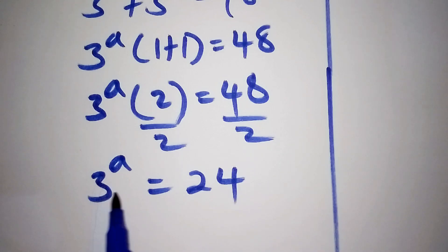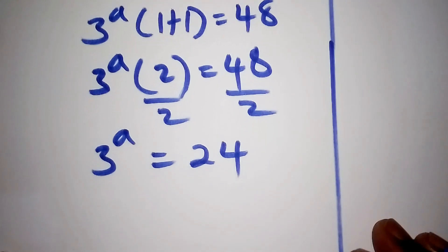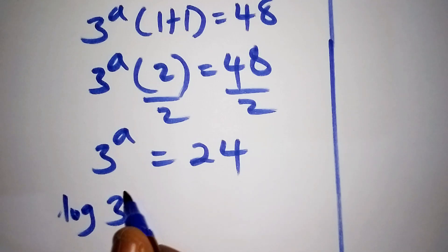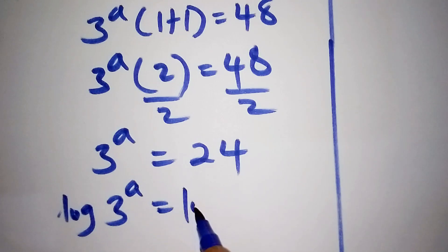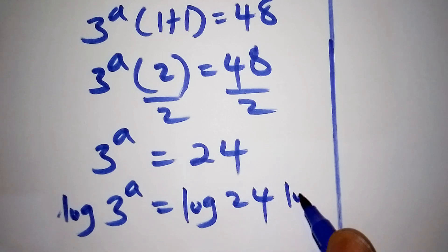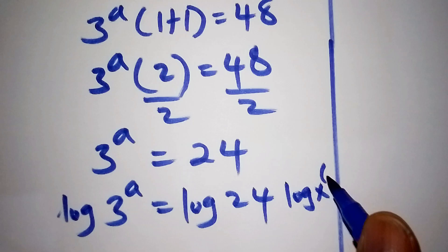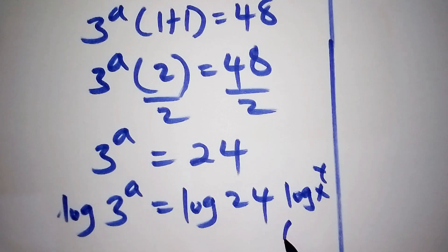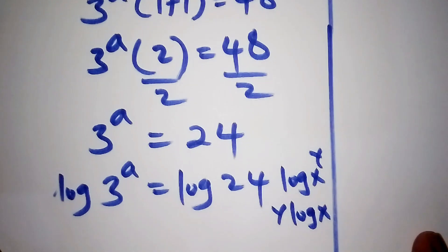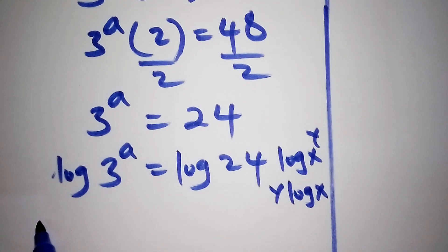So how do we now get the value for a? It's simple — let us introduce the log. That is the trickiest trick that you never know. So when you introduce the log, we shall have the log of 3 to the power of a is equals to the log of 24. Now, assuming we have the log of x to the power of y, this can also be written as y times the log of x. So the log of 3 to the power of a can also be written as a times log of 3.